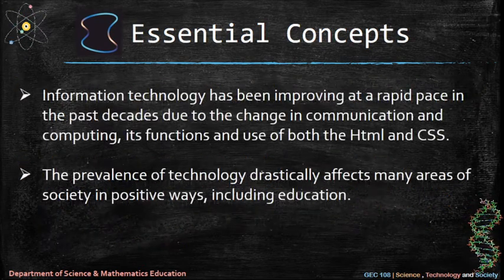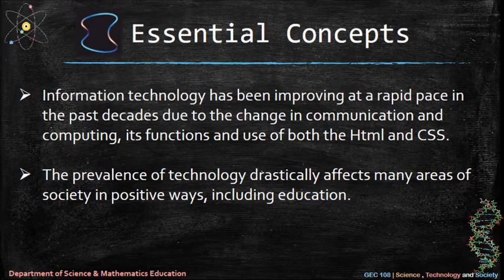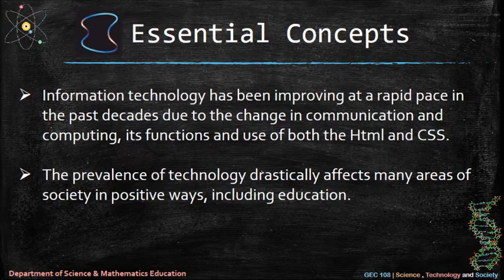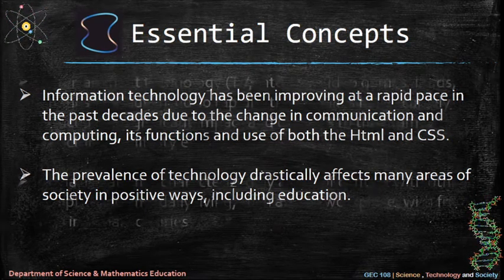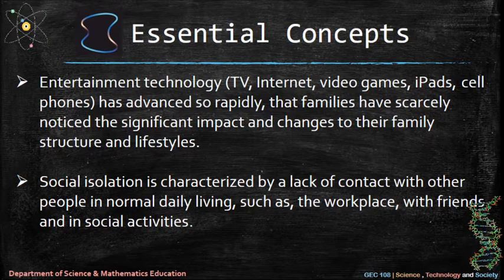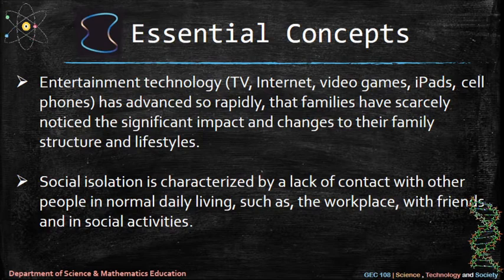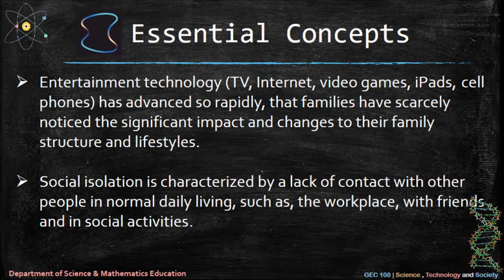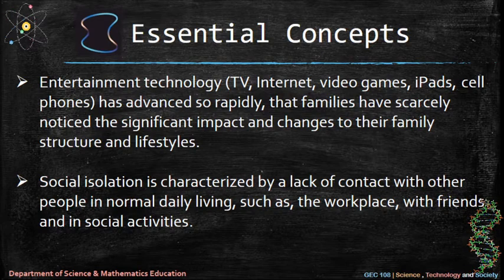Information technology has been improving at a rapid pace in the past decades due to the change in communication and computing, its functions and use of both HTML and CSS. The prevalence of technology drastically affects many areas of society in positive ways, including education. Entertainment technology — TV, internet, video games, iPads, cell phones — has advanced so rapidly that families have scarcely noticed the significant impact and changes to their family structure and lifestyles. Social isolation is characterized by a lack of contact with other people in normal daily living, such as the workplace, with friends, and in social activities.